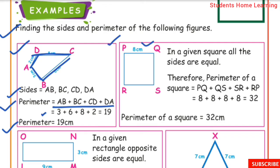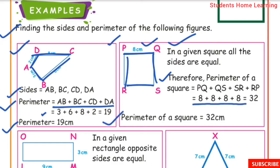Next one: a square is given. In a square, all sides are equal. The measurement of one side is 8 cm, so all sides are 8 cm. Perimeter of square equals PQ plus QS plus SR plus RP, which gives 32. Perimeter of square is equal to 32 cm.